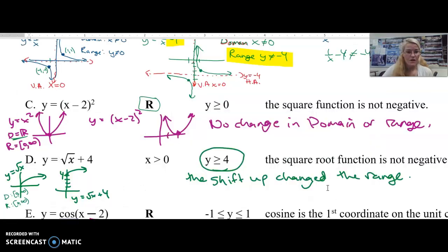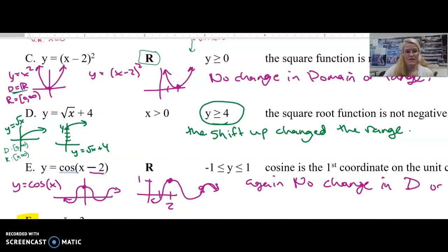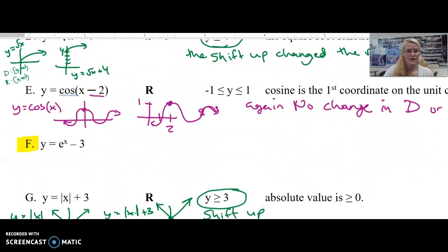When you look at cosine of x minus 2, what I had for you here was it's just going to shift all of cosine over by 2. So no change in the domain. It's still all real numbers. But your range, because cosine normally is bounded above and below by 1 and negative 1, similarly. So pause the video right now on your own. See if you can predict, kind of do what we did by hand first. What do you think e to the x minus 3 should look like? So pause your video.